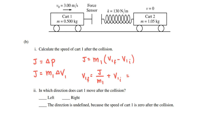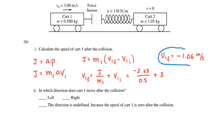Making the substitutions: the impulse was negative 2.03 newton-seconds, the mass of cart 1 was 0.5 kilograms, and the initial speed of cart 1 was 3 meters per second to the right. Doing negative 2.03 divided by 0.5 and adding 3 gives a final velocity of cart 1 of negative 1.06 meters per second. The negative sign means that after the collision, cart 1 is moving to the left — it has bounced back.